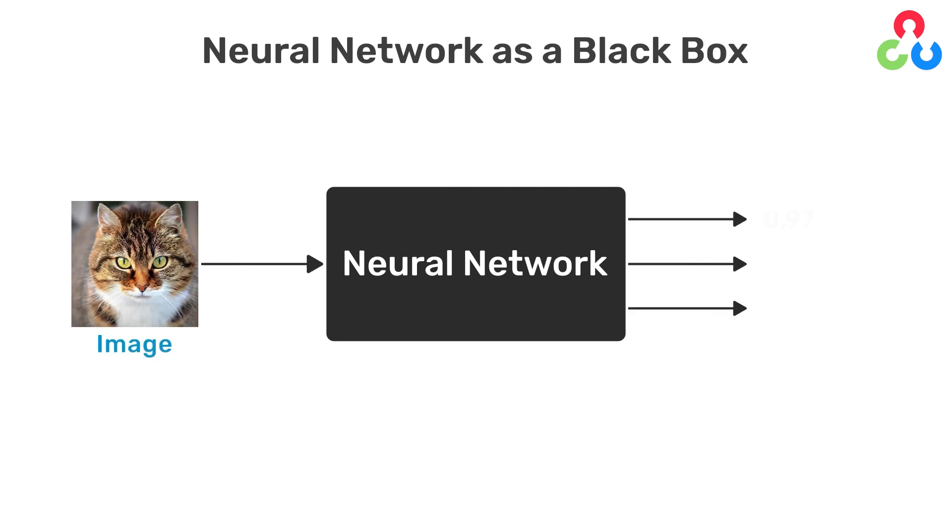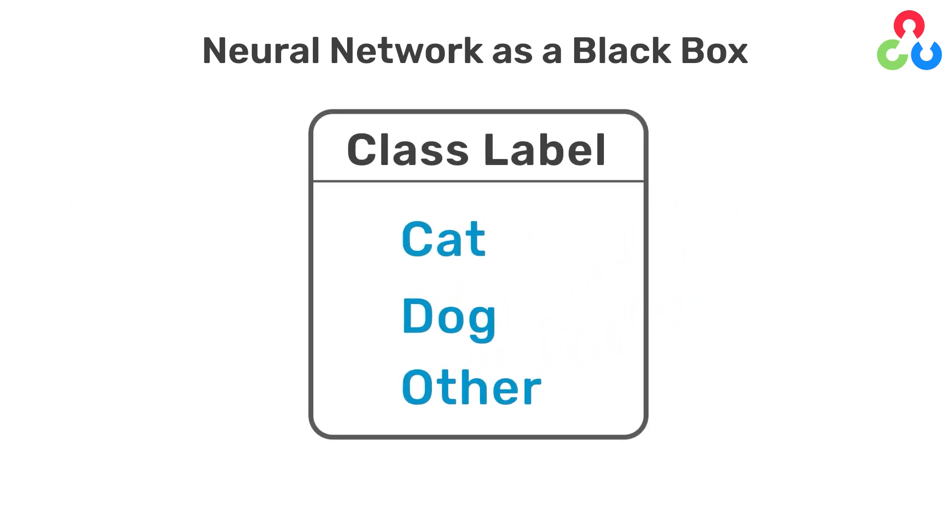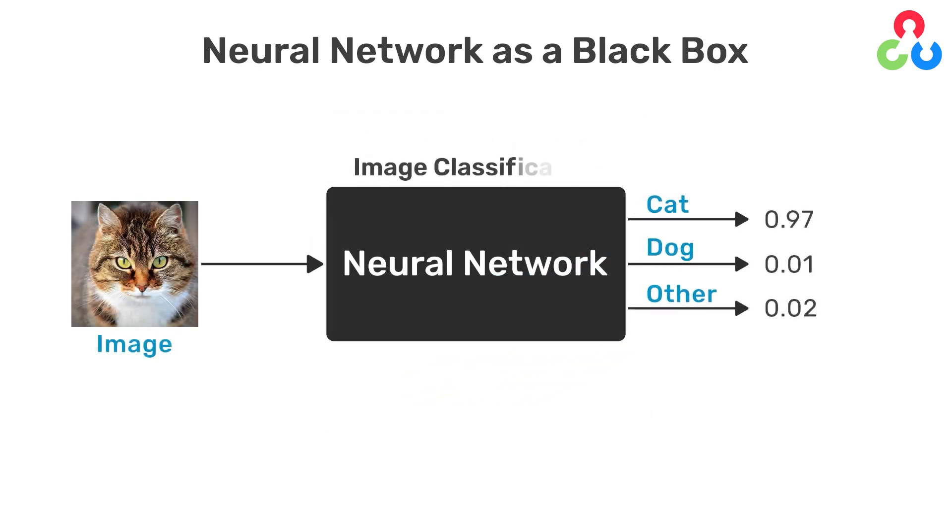The output from the network are three numbers between 0 and 1 where each output corresponds to the probability that the input image is either a cat, a dog, or another category which we simply call Other. We often refer to these categories as labels or class labels. This particular type of problem is called image classification in which the input is an image and the output is a numerical value for each of the three possible classes.